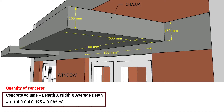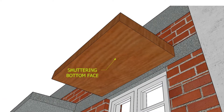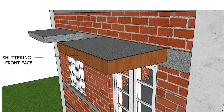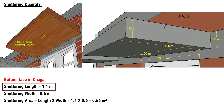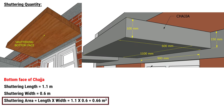Now let's talk about shuttering. We need shuttering for the bottom face, front face, and left and right side faces of the chhaja. For the bottom face, the shuttering length is 1.1 meters and the width is 0.6 meters. The shuttering area of the bottom face will be 1.1 × 0.6 meters, resulting in a total area of 0.66 square meters.